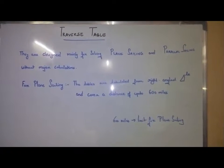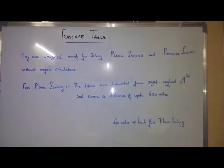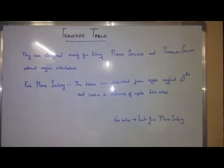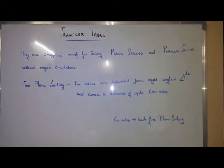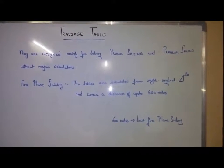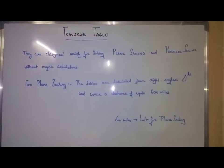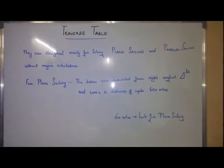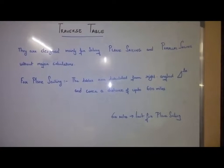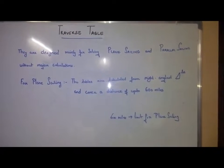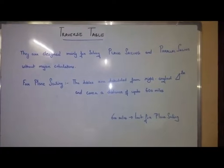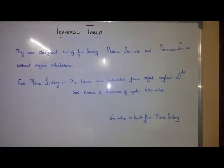Traverse tables are tables provided in Norie's table. They are designed mainly for solving plane sailing and parallel sailing without major calculations. For plane sailing, the tables are tabulated from right angle triangles and they cover a distance of up to 600 miles.